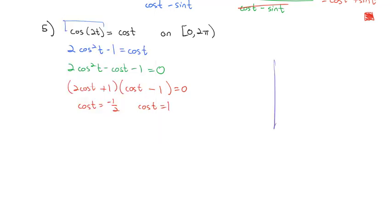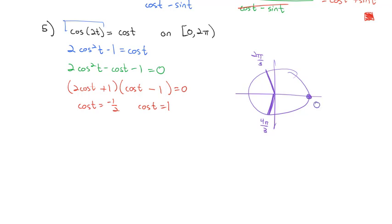We solve those using the unit circle. Cosine equals negative 1/2 at 2π/3 and 4π/3. Cosine equals 1 at 0. So we have three solutions: t equals 0, 2π/3, and 4π/3.